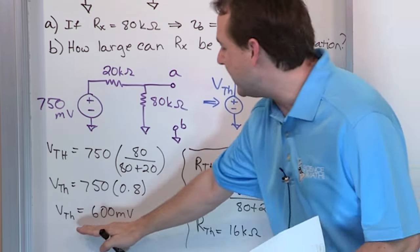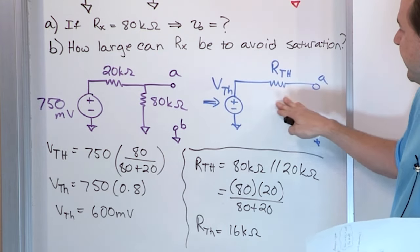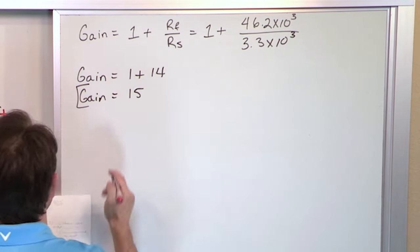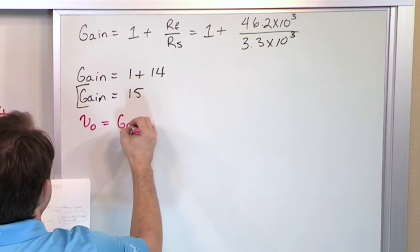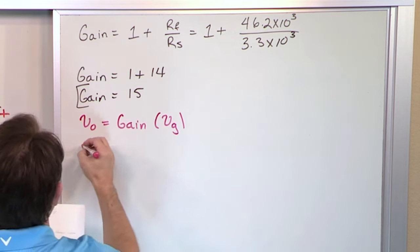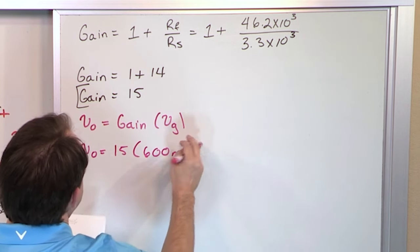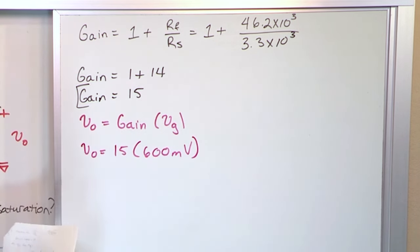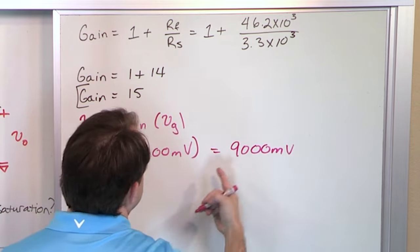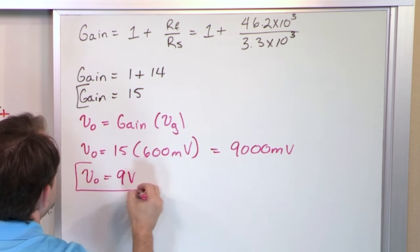The bottom line is the gain is 15 times your 600 millivolts — that is your new input signal, as if the Thevenin equivalent were connected there. So the output voltage is equal to the gain times V_thevenin: 15 times 600 millivolts equals 9,000 millivolts. Moving the decimal, V_output equals 9 volts. This is the final answer to Part A.